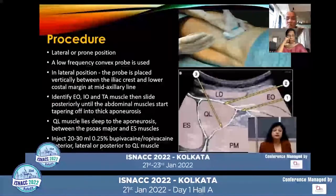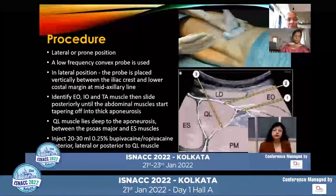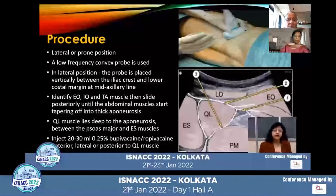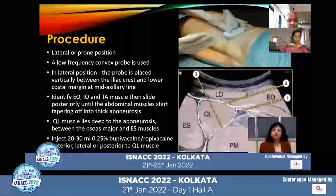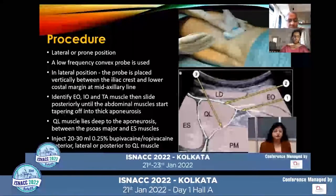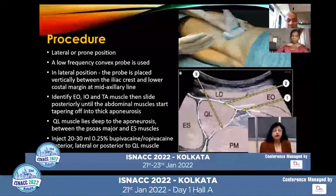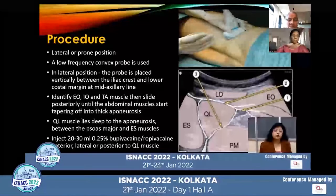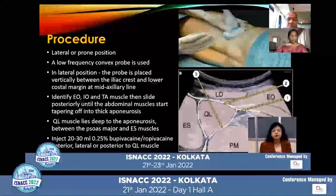The quadratus lumborum block can be placed in lateral or prone position of the patient by using a low-frequency convex probe. In lateral position, the probe is usually placed vertically between the iliac crest and the lower costal margin at the mid-axillary line to identify the external oblique, internal oblique, and transversus abdominis muscles of the abdomen. Then it moves posteriorly until the abdominal muscles start tapering off and convert into thick aponeurosis. The quadratus lumborum muscle lies just deep to this aponeurosis, between the psoas major and the erector spinae muscles.